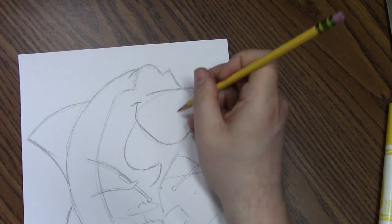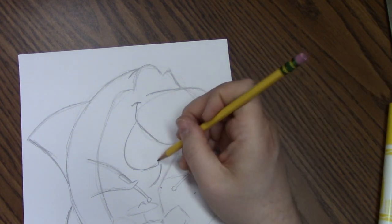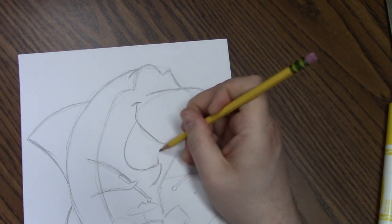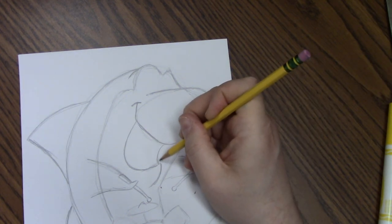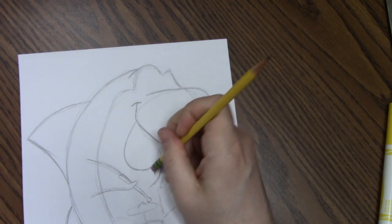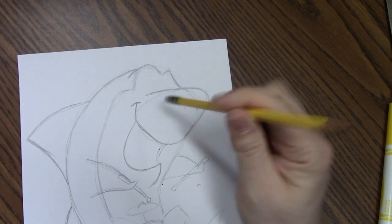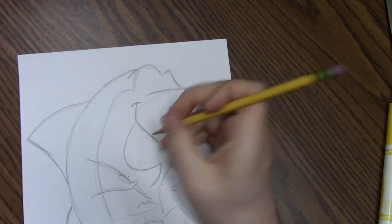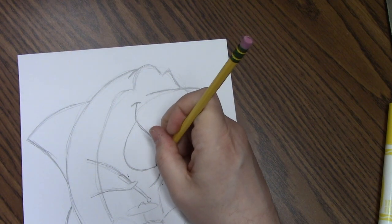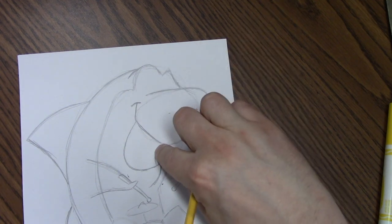And then we're going to connect these two parts with a curved line. Actually, a double curved line because that section is going to be white. Let me just clean that up a little bit so it's easier to see. Okay. That's going to stay white.